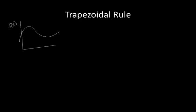We previously learned that we can use the trapezoidal rule to approximate the definite integral of a given curve. In this part we're going to try to generalize the trapezoidal rule. Let's say we have a function f of x, with our a value here and our b value here.